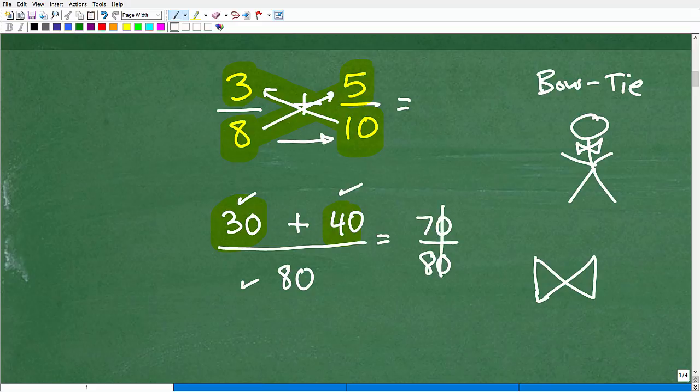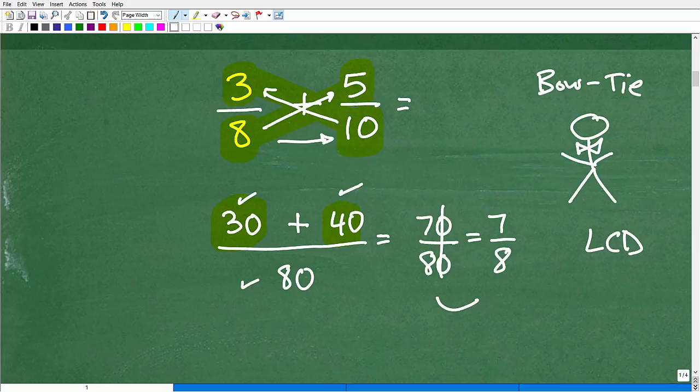And you could cross-cancel these zeros. So this reduces down to 7 eighths. Now, the thing about this particular method, the bowtie method, is we didn't find the LCD, okay? However, your answer very often needs to be reduced because that's one of the little drawbacks on this particular method. But it is a powerful method. It's one of the most powerful just shortcuts you just need to know this, okay? So let's look at this problem again. I'll do one other example.